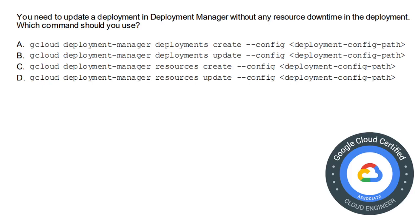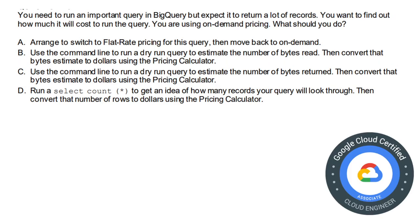Moving on to the next question. You need to update a deployment in Deployment Manager without any resource downtime. Which command should you use? The options involve: deployments create config, deployments update config, resource create config, and resource update config. The correct answer is deployments update config, because the question specifically asks to update a deployment.